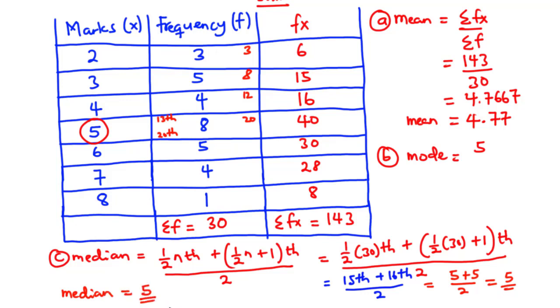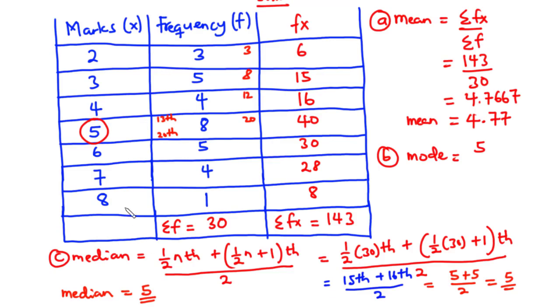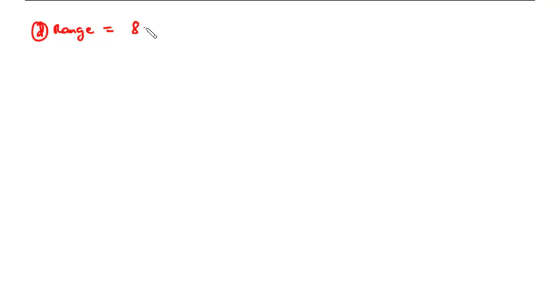You can confirm that answer using the traditional method. Now let's find the range. The range is the difference between the highest mark and the lowest mark. The highest mark is 8 and the lowest mark is 2. So 8 minus 2 is 6. The range is 6.